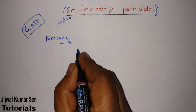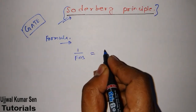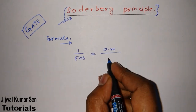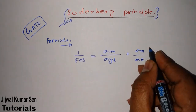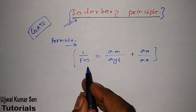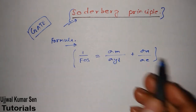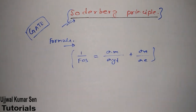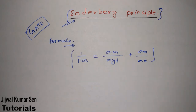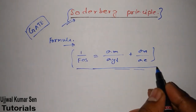Here is the formula: 1/FOS = σm/σyt + σa/σe. FOS is the factor of safety, σm is the mean stress, σyt is the yield strength, σe is the endurance limit, and σa is the amplitude stress. This is the major formula we use for the Soderberg principle.